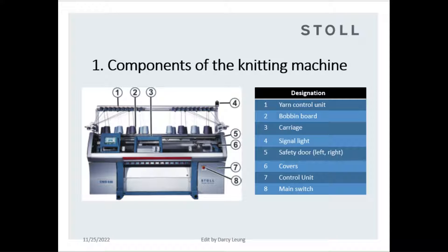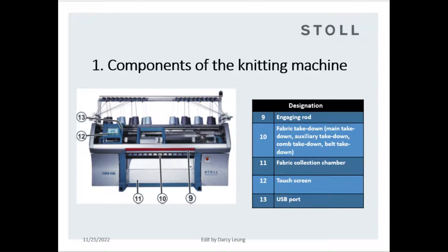5, safety door on left and right side — when the door is open, the machine stops. 6, covers — safety cover for carriage and all knitting parts. 7, control unit — all IC cards and electron boards. 8, main switch that turns the machine on and off. 9, engaging rod — pull up: machine running; pull down: machine stops.